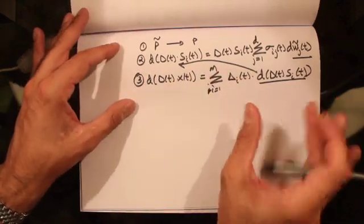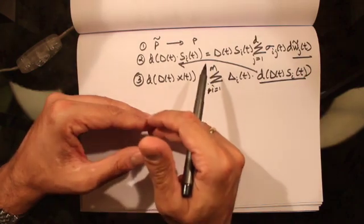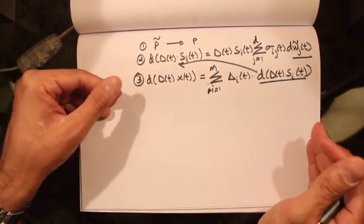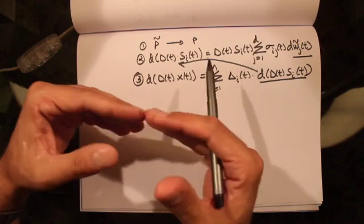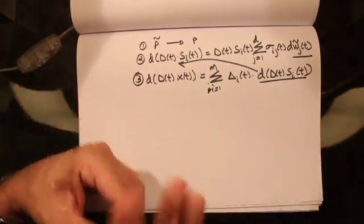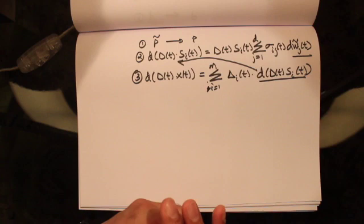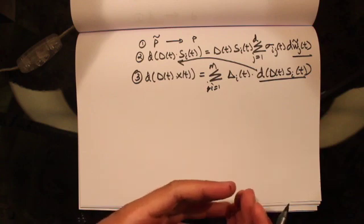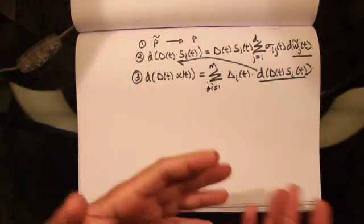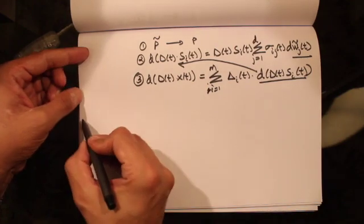So that's what we discussed in the previous lecture. Today we would like to talk about what we mean by a complete market model — what it means that a market model is complete. When we say a market model is complete, we are basically saying that any derivative security can actually be replicated or hedged.